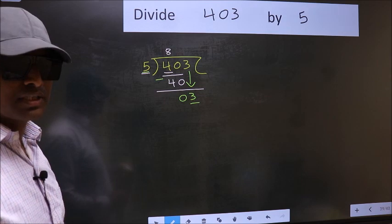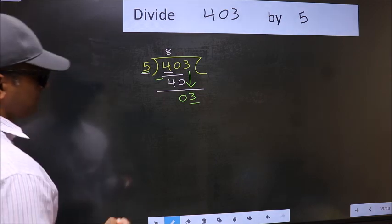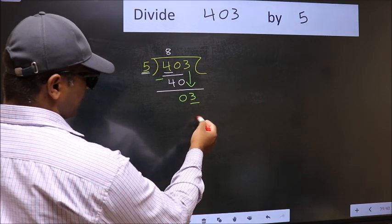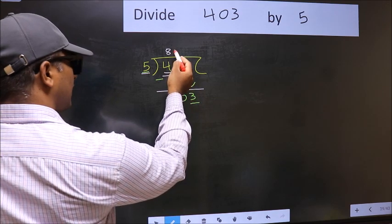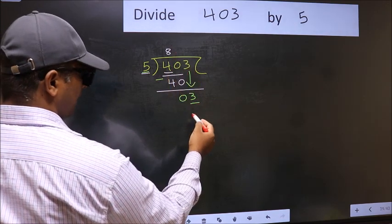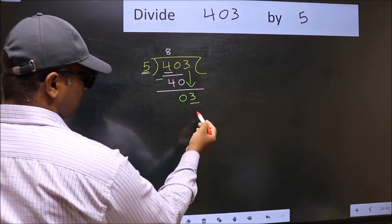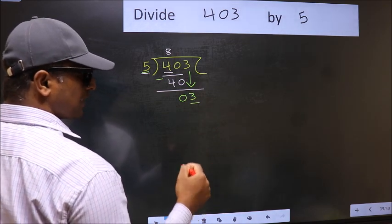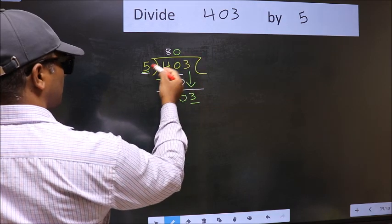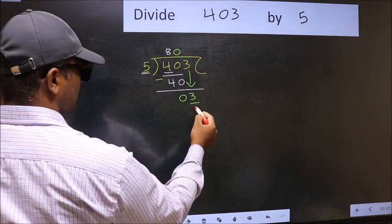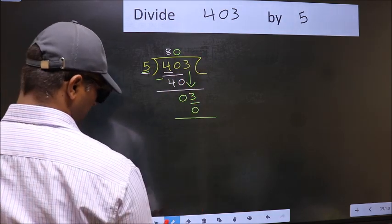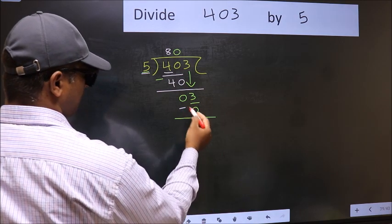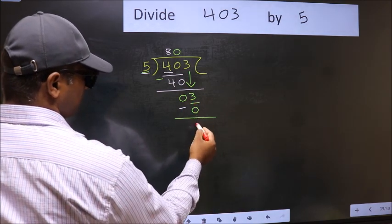Instead, what you should think of doing is, what number should we write here? If I take 1, we will get 5. But 5 is larger than 3. So what we should do is, we should take 0. So 5 into 0, 0. Now you should subtract. 3 minus 0, 3.